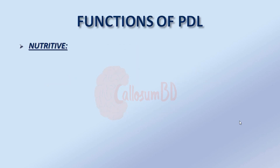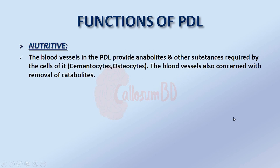Regarding the nutritive function of the periodontal ligament: the blood vessels in the periodontal ligament provide anabolites and other substances required by the cells of it, such as cementocytes and osteocytes. The blood vessels are also concerned with the removal of catabolites.